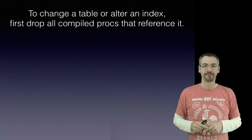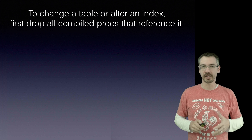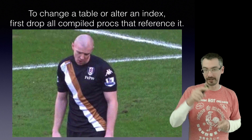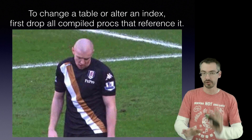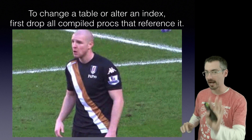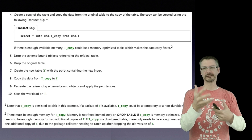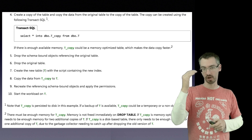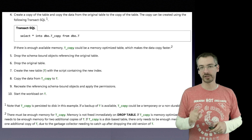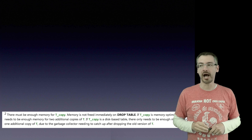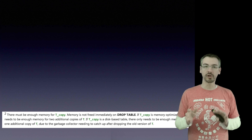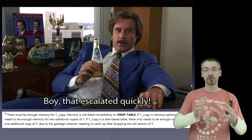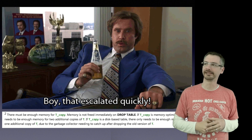That seems odd for an application that was all about high concurrency and very frequent inserts, updates, and deletes. But wait, there's more. If you're going to change a table or alter an index, you have to drop all of the compiled procedures that reference it — not disable, you have to drop them. So now our outage just got trickier: stop the application, drop all the stored procedures, move all the data across, add the stored procedures back in, then let the app go live. And there must be enough memory for the copy, because memory is not freed immediately when you drop the old table.